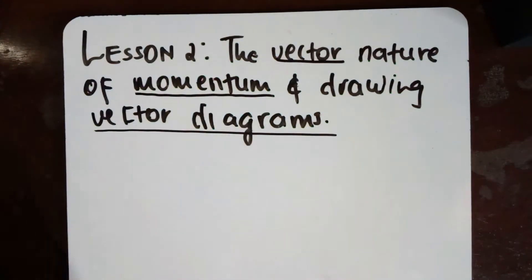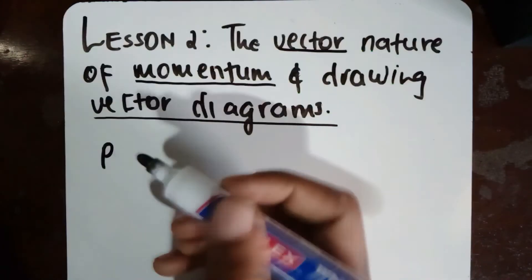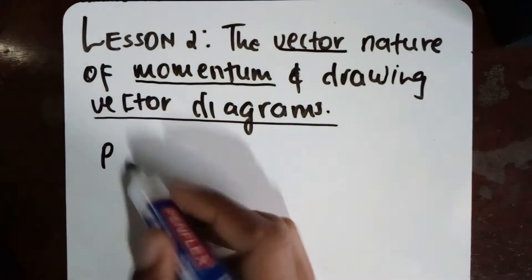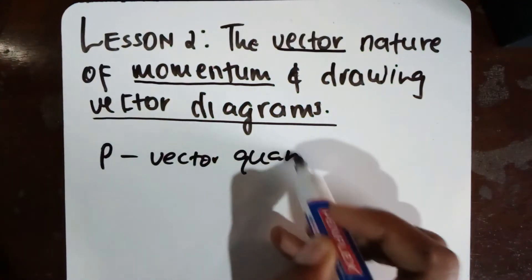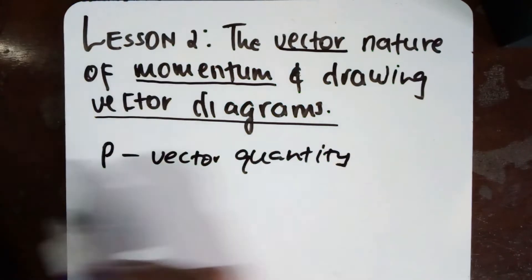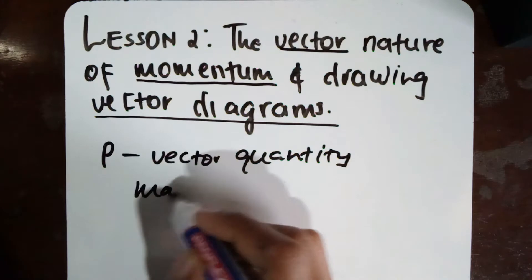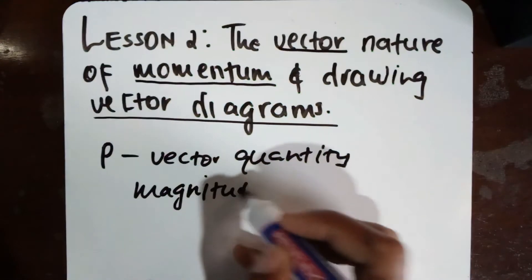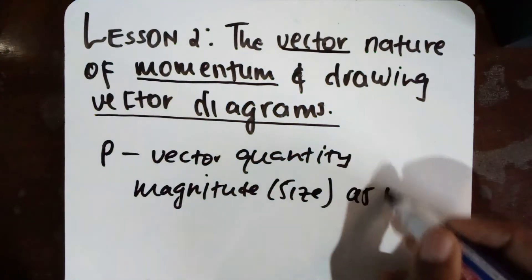To continue our discussion on momentum, it is important to know that momentum is a vector quantity. This means that it has both magnitude and direction. Remember, we represent momentum by p, and it is a vector quantity — a vector quantity has both magnitude, or size, as well as direction.